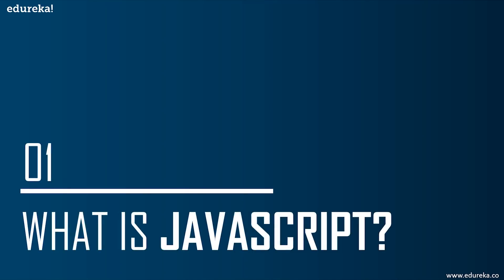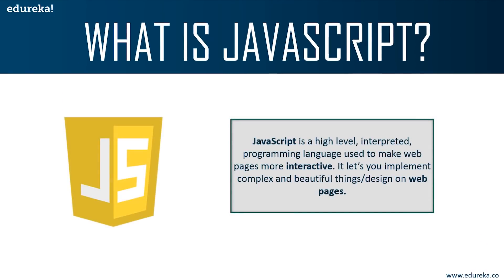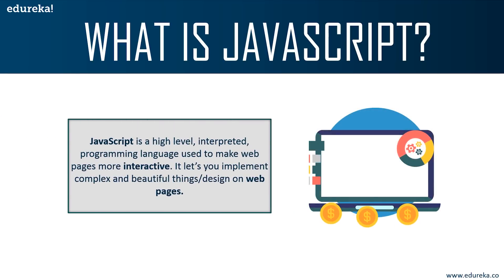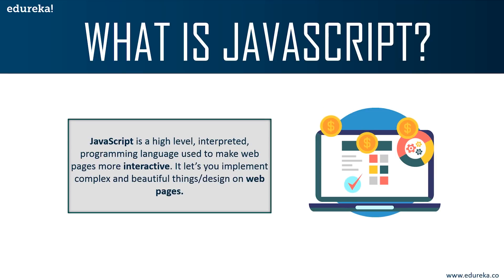So what is JavaScript? JavaScript is basically a high-level interpreted programming language used to make web pages more interactive. It is a very powerful client-side scripting language which makes your web page more lively and interactive. It is a programming language that helps you implement complex and beautiful designs on web pages. This language is used to create beautiful web pages and applications, and also used in smart watches, games, and websites such as Google, Facebook, Netflix, Amazon, etc.